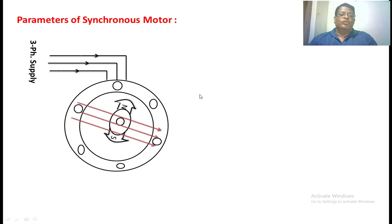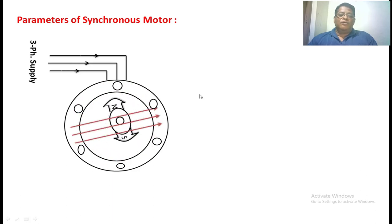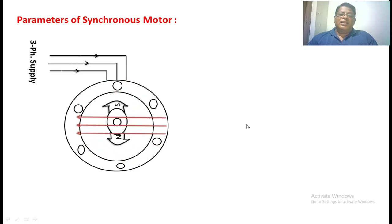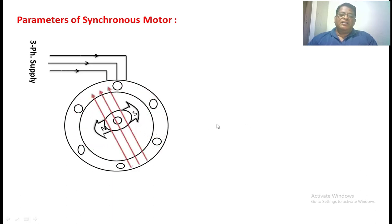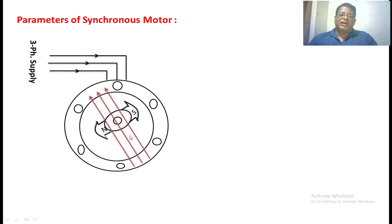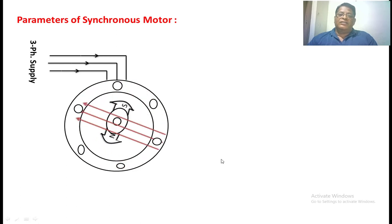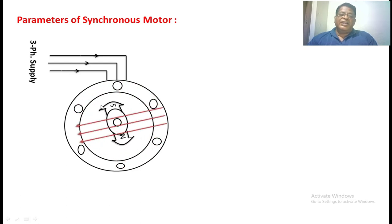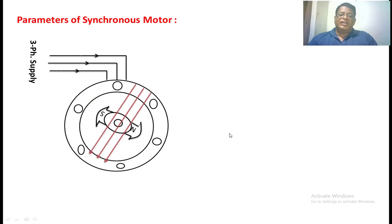Both are running at a constant speed. Now in the air gap, there is an interaction between the rotating flux and the rotor flux. There is a resultant flux created in the air gap, which is the resultant of these two.